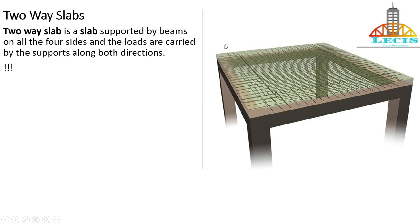This figure represents a slab supported by beams on all directions — that is, the slab is supported by beams on all four sides. The basic definition of two-way slab is: a slab supported by beams on all four sides where the loads are carried by the supports along both directions. Previously in one-way slab, loads were carried in only one direction, but in two-way slab loads are carried in both directions.